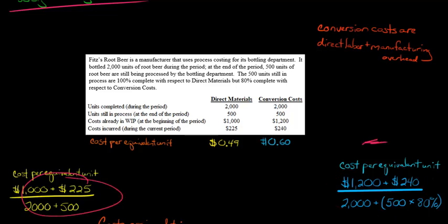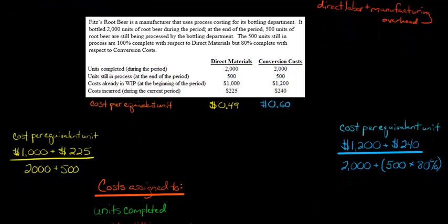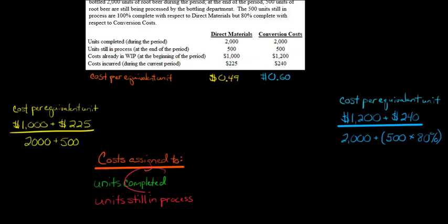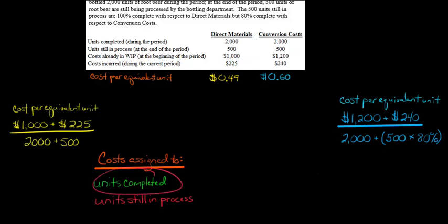We've got the conversion costs over here, and then over here the direct materials. So we've got our cost per equivalent unit, and what we're going to do is multiply that. I'm going to make a table to make it simple for you to follow. Cost assigned to the units that are completed and transferred out of the department during the period — that's the 2,000 where we said they've been bottled, we've done all the labor, we did everything, they're out of this department. And then the units that are still in process.